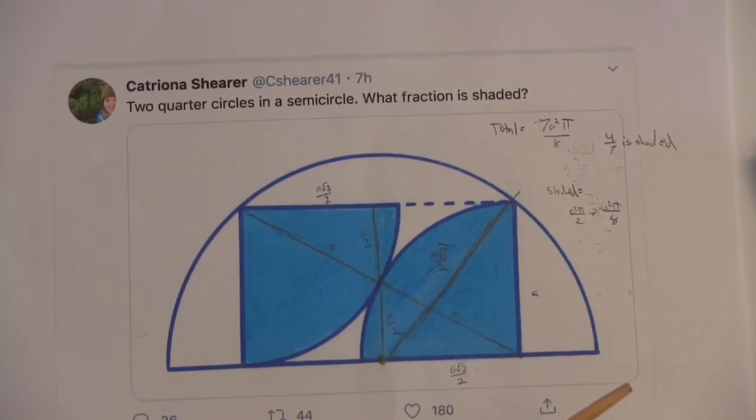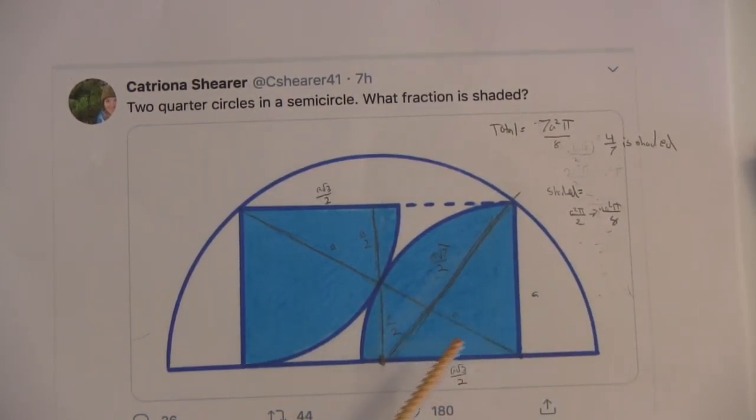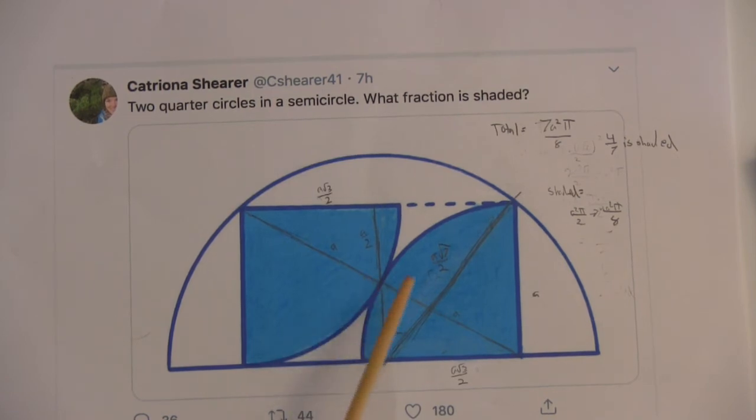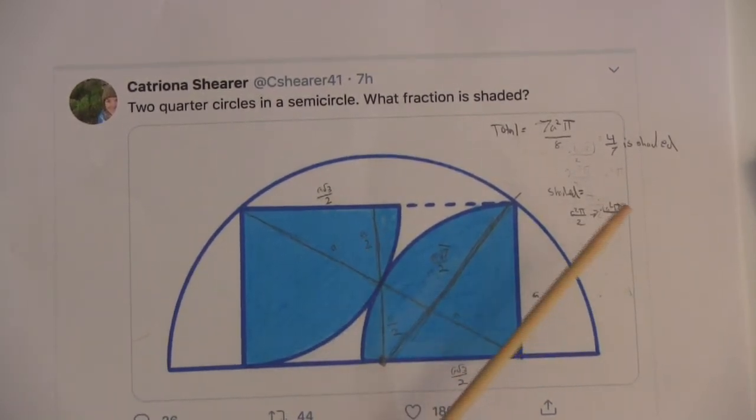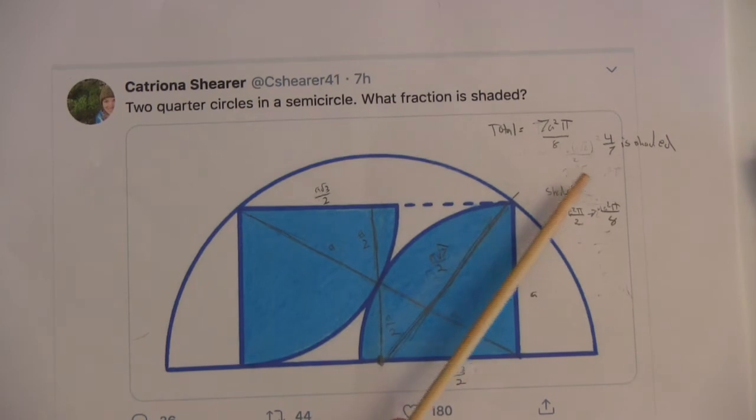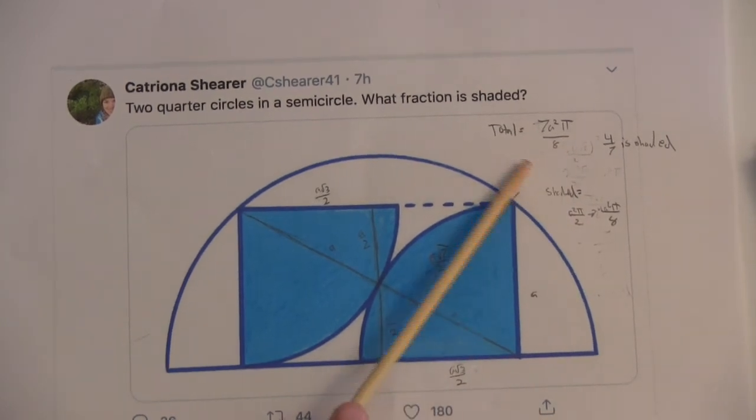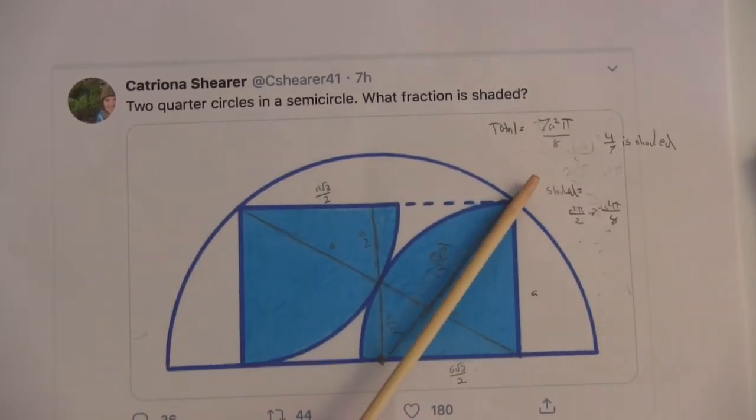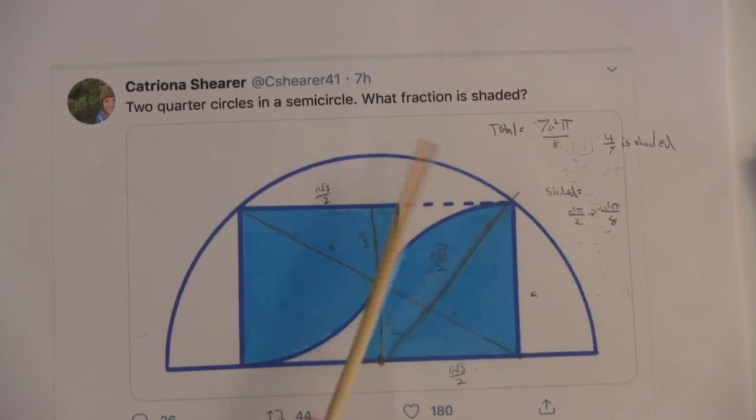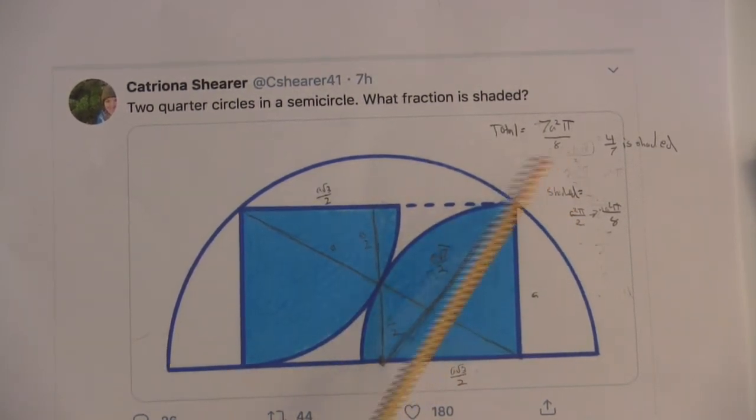Cool. And then from there, we can just use the area formula for a circle and divide by 2 to find the whole area. So this turns out to be 7A squared pi. It would be over 4, but since it's a semicircle, we divide by 2, so it's over 8. All right. Nice.